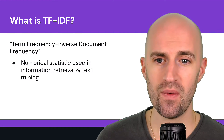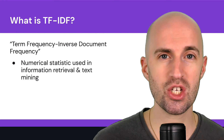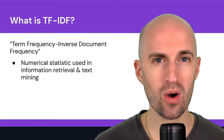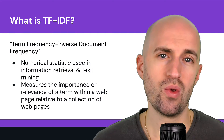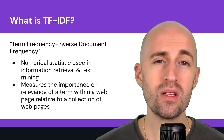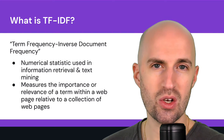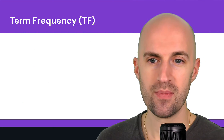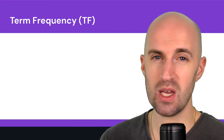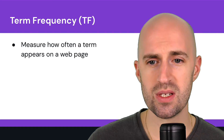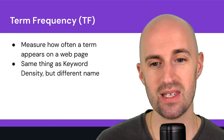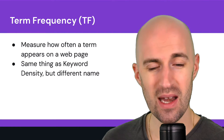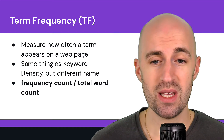TF-IDF is a numerical statistic used in information retrieval and text mining. It measures the importance or relevance of a term within a webpage relative to a collection of web pages. Let's break it into two parts. TF — term frequency — is the measure of how often a term appears on a webpage. It's essentially the same as keyword density, just a different name: frequency count divided by total word count.